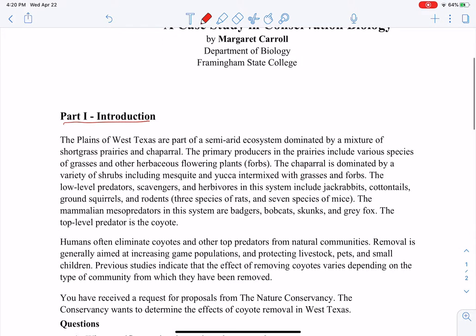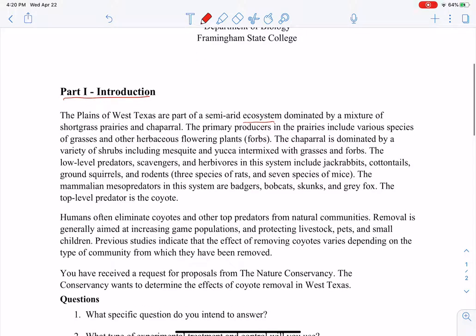The plains of West Texas are part of a semi-arid ecosystem dominated by a mixture of shortgrass prairies and chaparral. The primary producers in the prairie include various species of grasses and herbaceous flowering plants. The chaparral is dominated by a variety of shrubs including mesquite and yucca. So these are all shrubs with grasses and forbs.